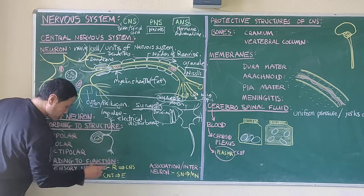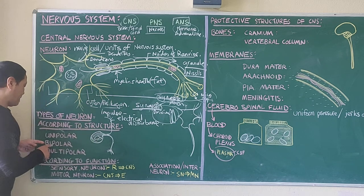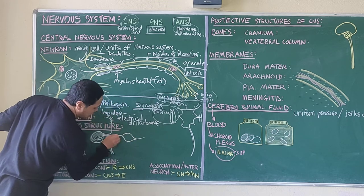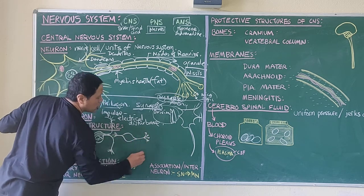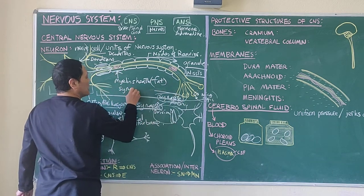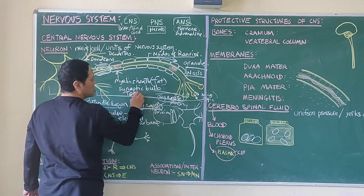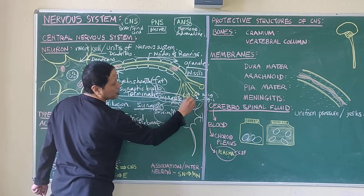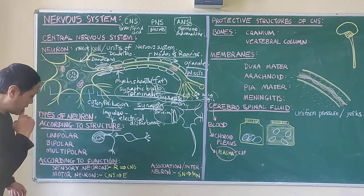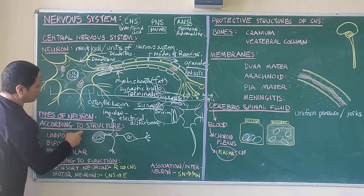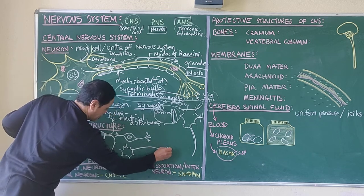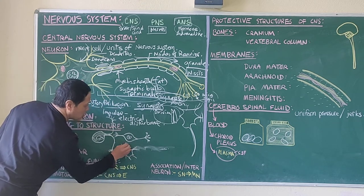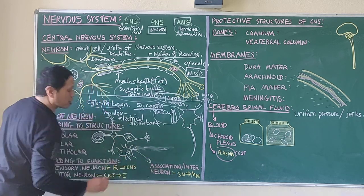Bipolar neurons, as the name suggests, have two poles — two finger-like projections. One forms the dendrite, the other forms the axon end. This end is known as the synaptic knob, also known as the terminal knob. Its job is to help carry the impulse across the microscopic gap. Multipolar neurons have many finger-like projections and may not have an elongated axon. This is your association neuron.